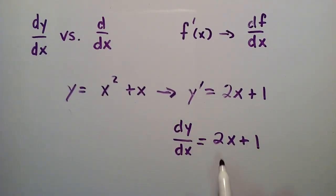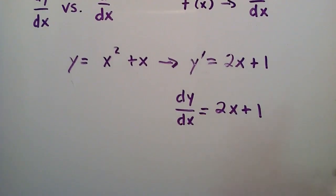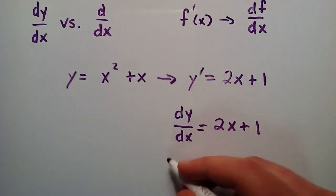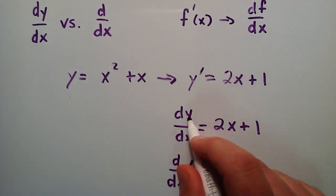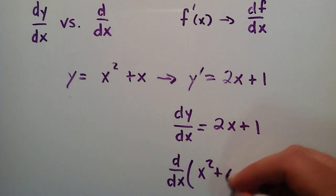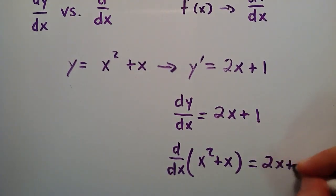You could also write it in this form, you could use this notation as well. So if you wanted to use the d over dx notation to describe what just happened here, you could just simply write d over dx. And in this case, instead of writing the y there, you would just put x squared plus x, and that equals 2x plus 1.